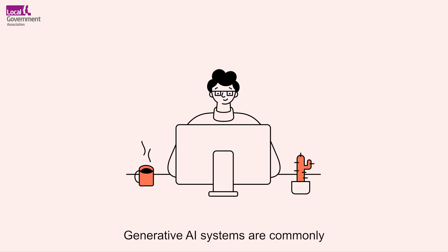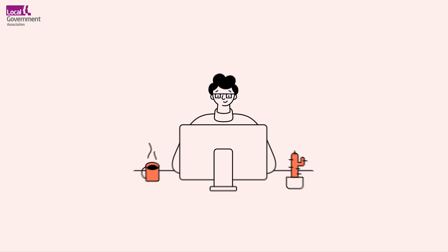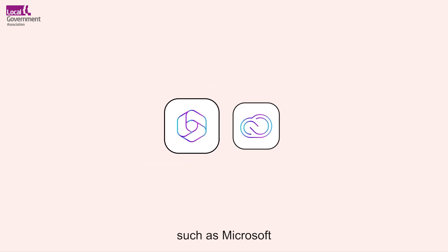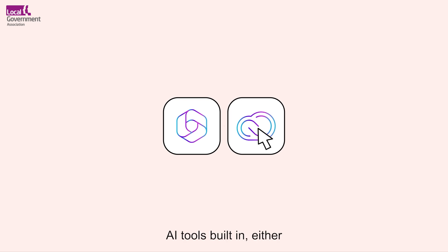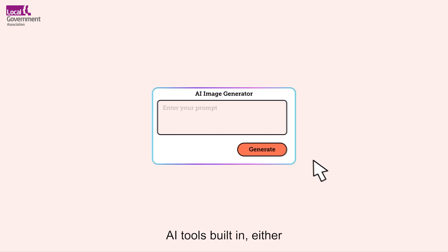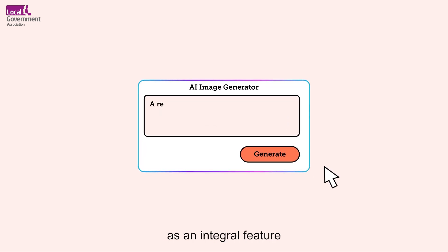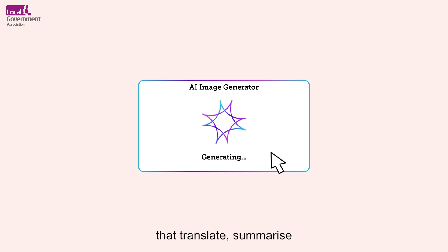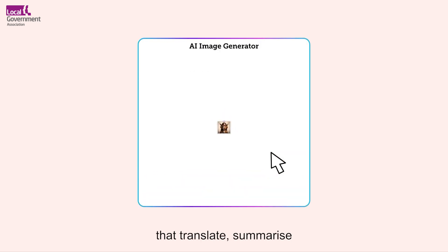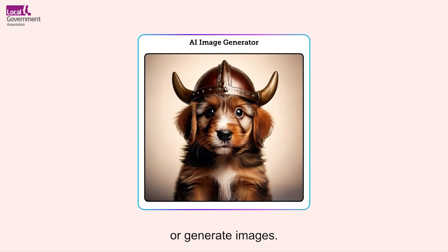Generative AI systems are commonly integrated into existing computer software. Recent versions of software such as Microsoft Office and Adobe Creative Cloud have generative AI tools built in, either as an integral feature or as an optional extra. These could include tools that translate, summarise or generate images.